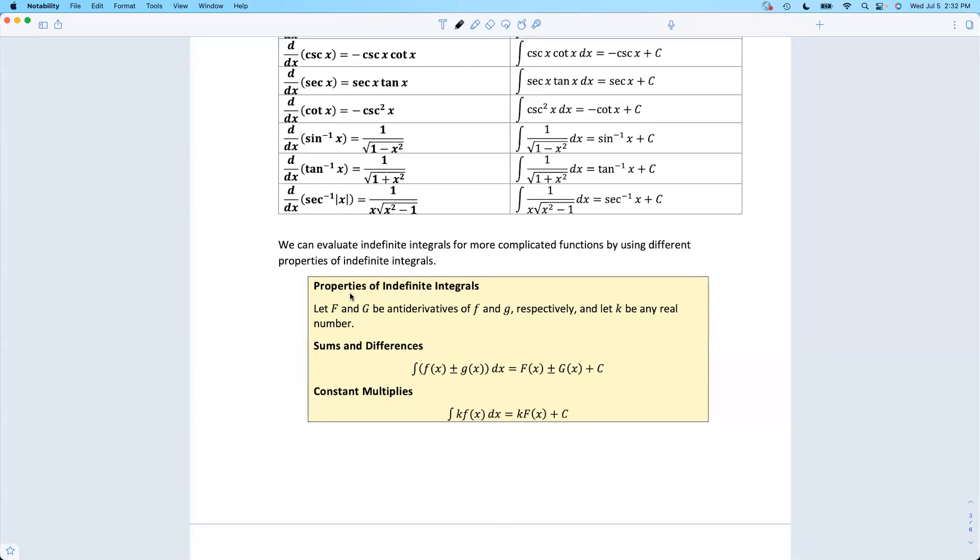What we're going to do later in a future video is see how to take what we learned for product rule and kind of fudge it into a formula for antiderivatives. And we call that integration by parts. But it is very complicated. It is not just product rule backwards.